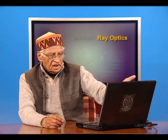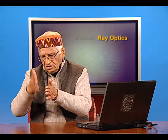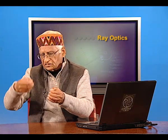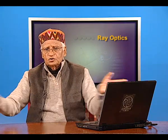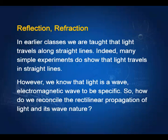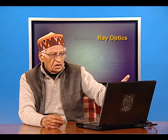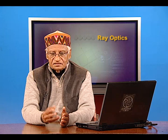But what is ray optics? In earlier classes, we are taught that light travels along straight lines. You must have done those experiments — you have two or three cards with holes at the same height, and you shine a light from one side and see from the other. Many simple experiments do show that light travels along straight lines. However, we know also that light is a wave. How do we reconcile the two things? It is found that as long as the aperture through which light has to pass has dimensions much larger than the wavelength of light,